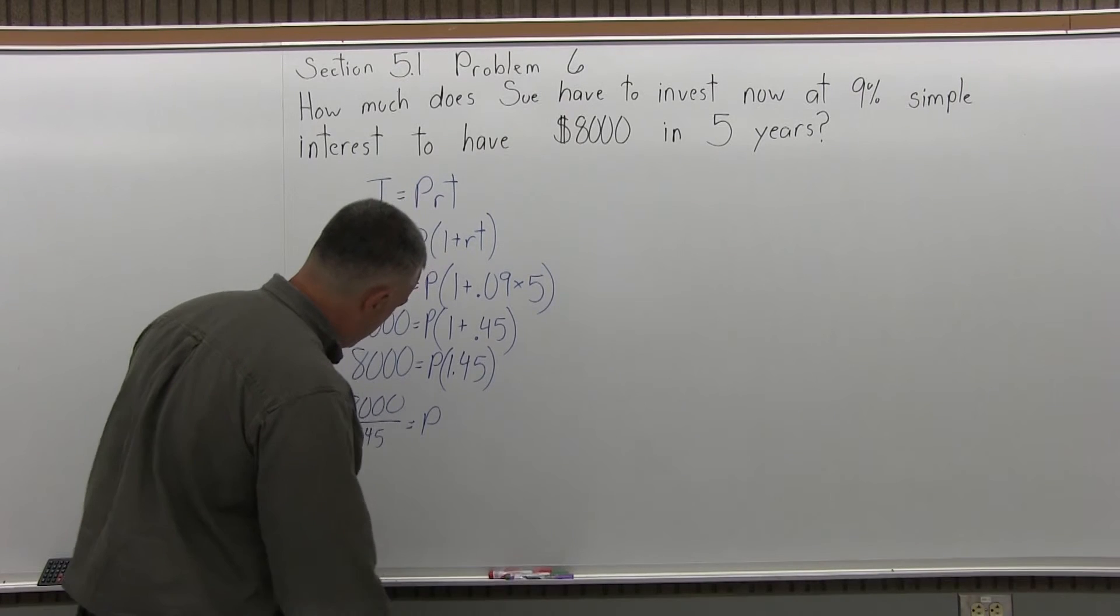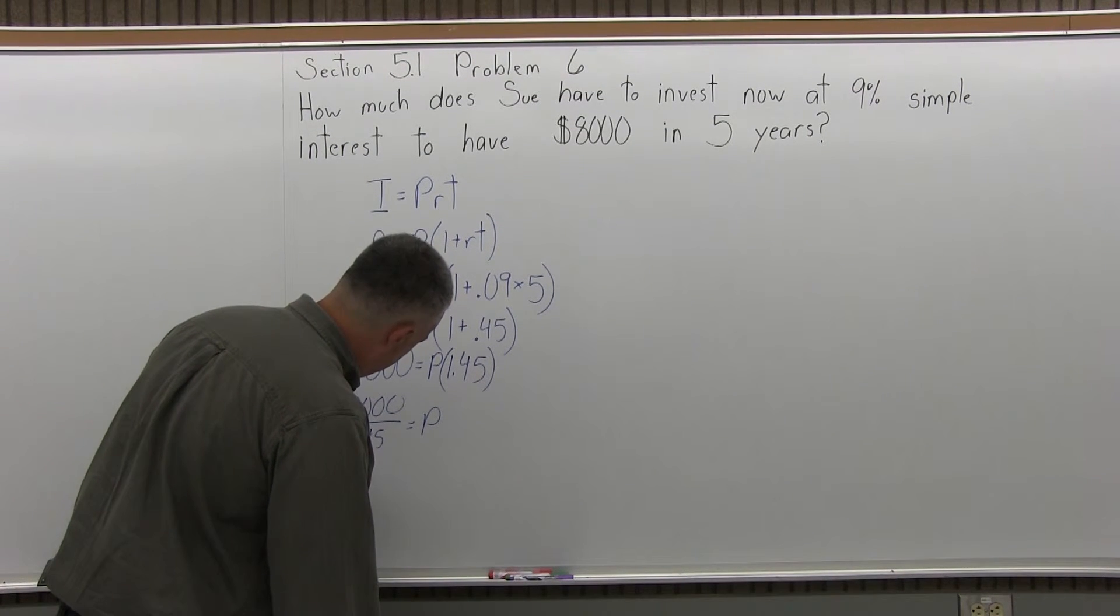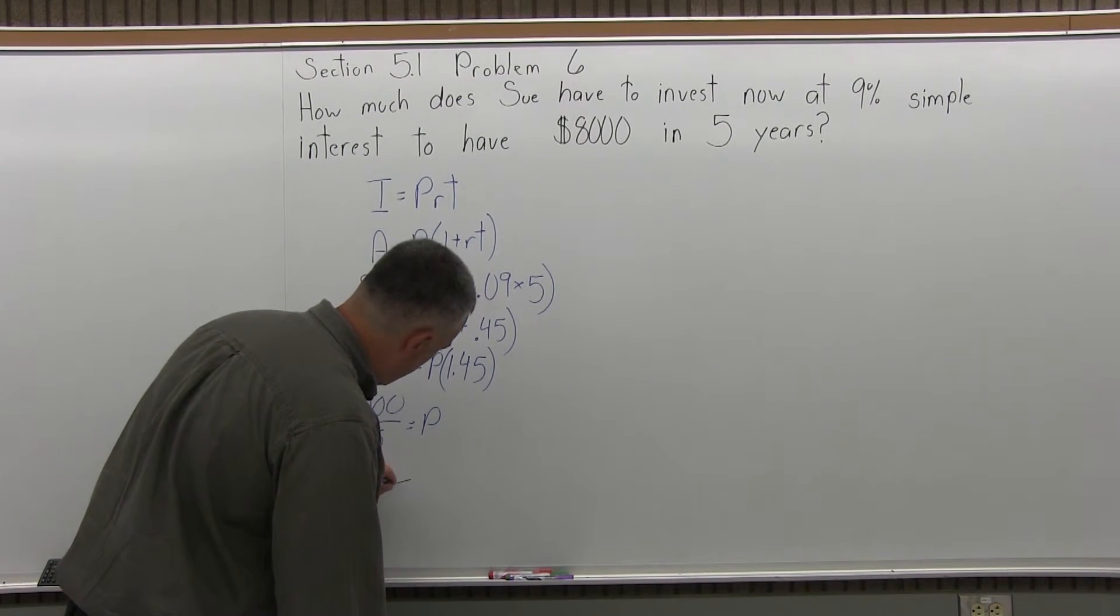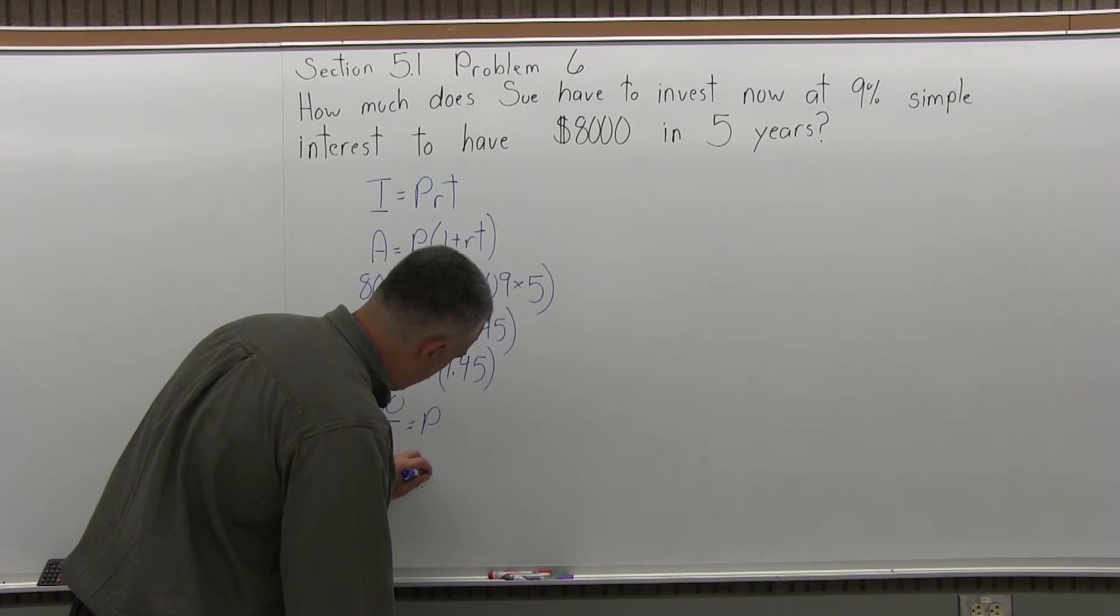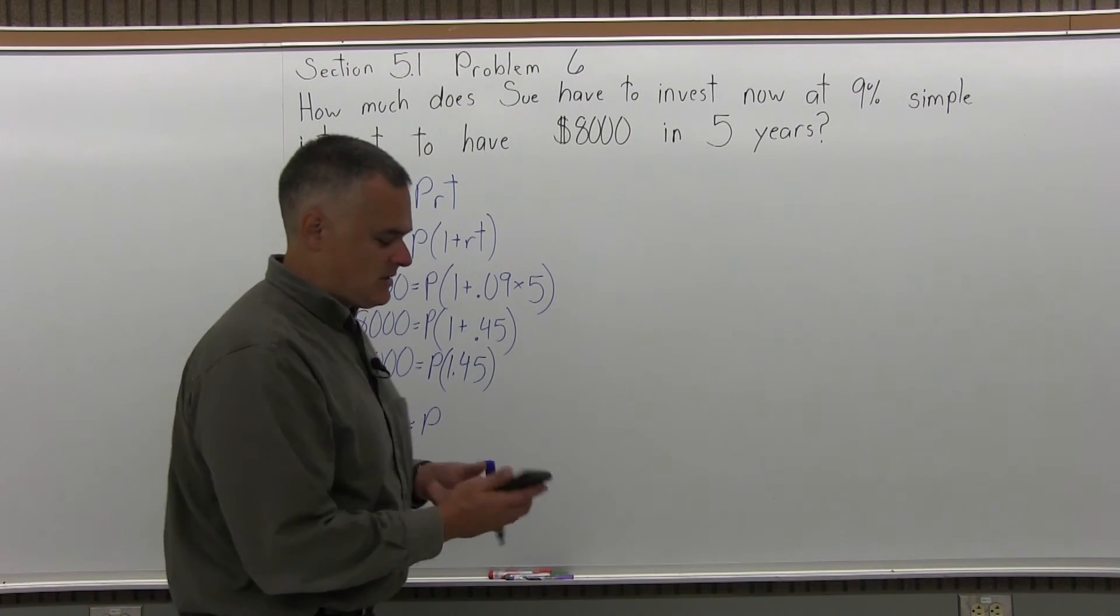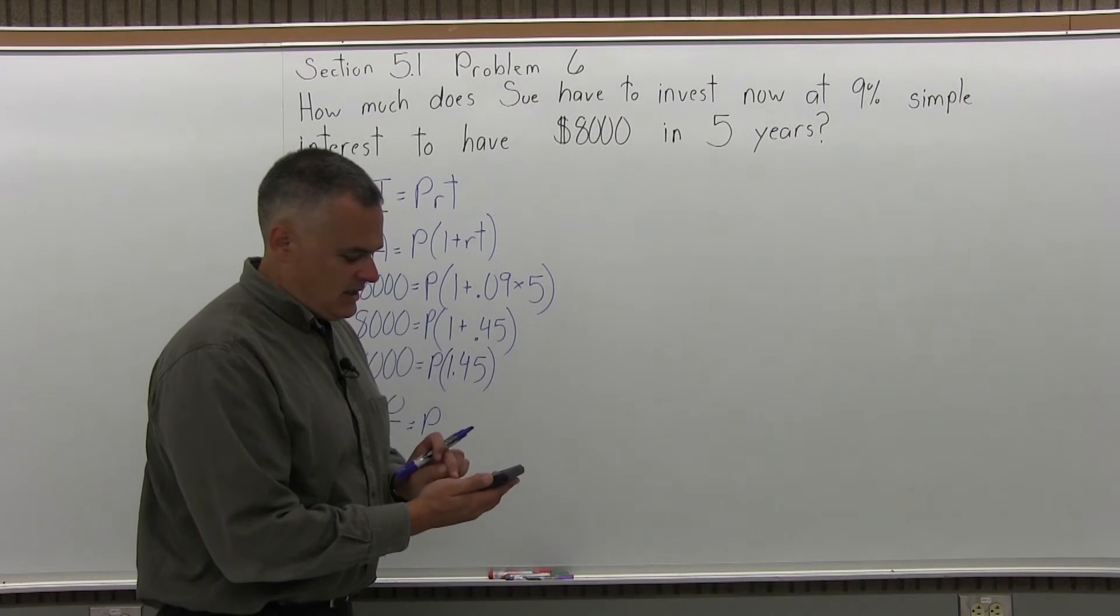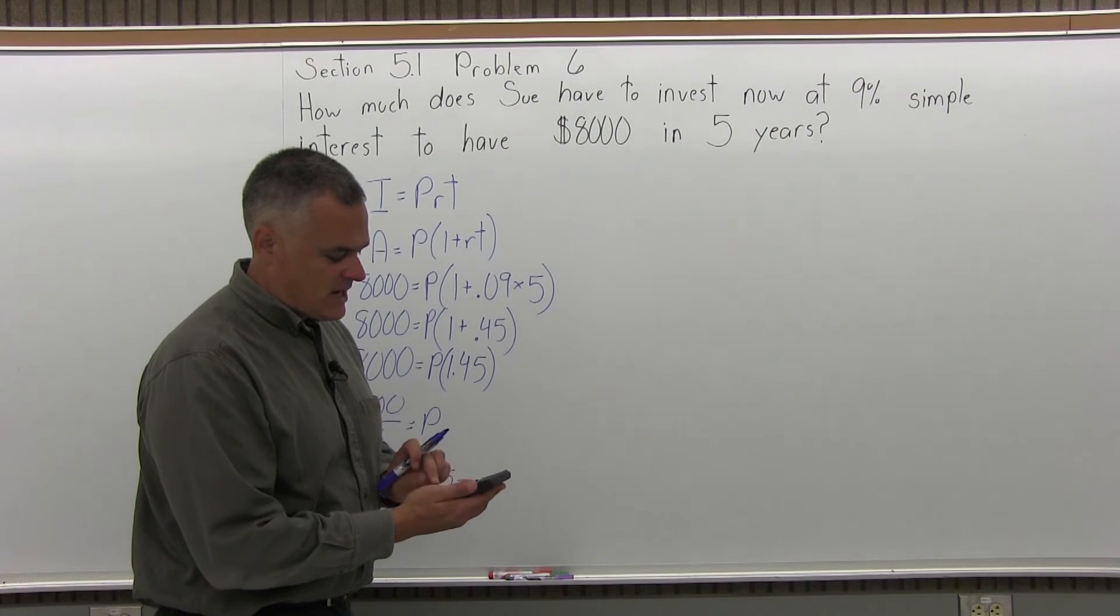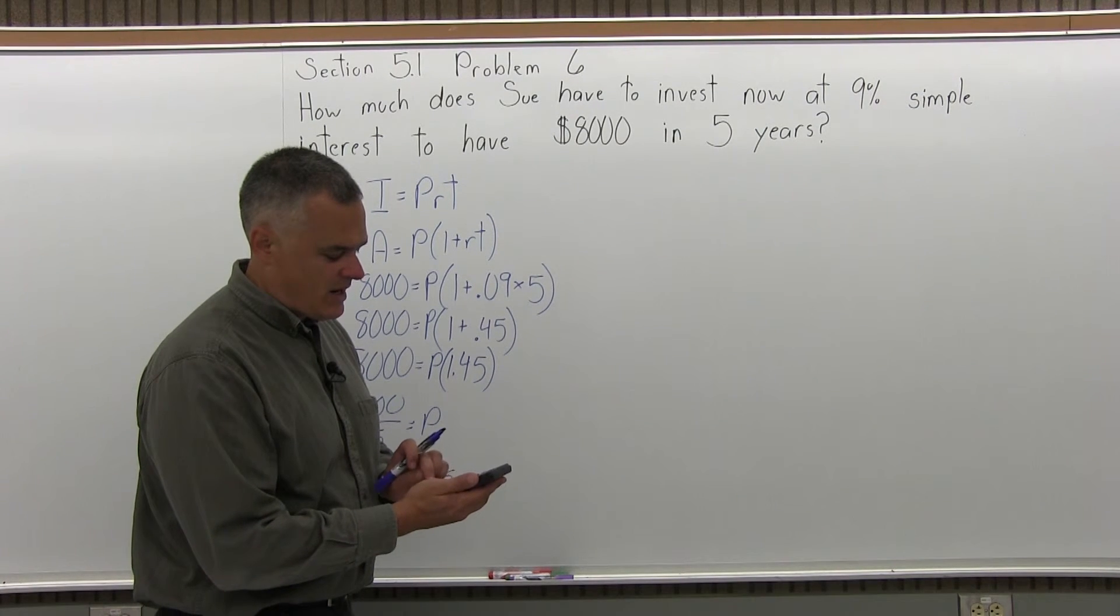So with the calculator, I'm going to do 8,000 divided by 1.45 equals. And the calculator will tell me the answer right away. So 8,000 divided by 1.45 equals.